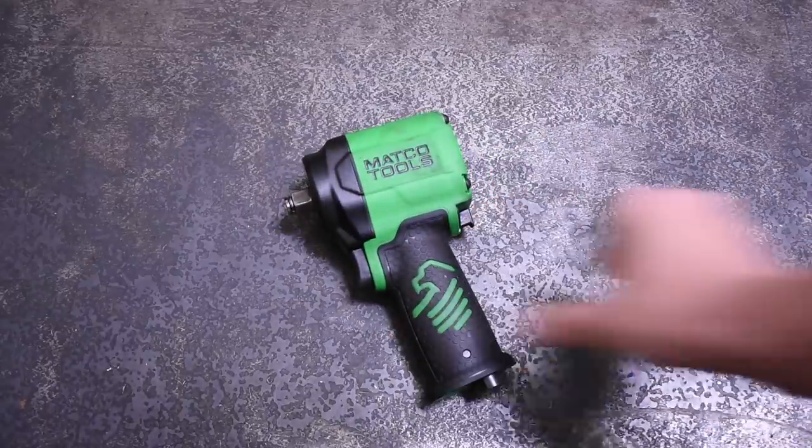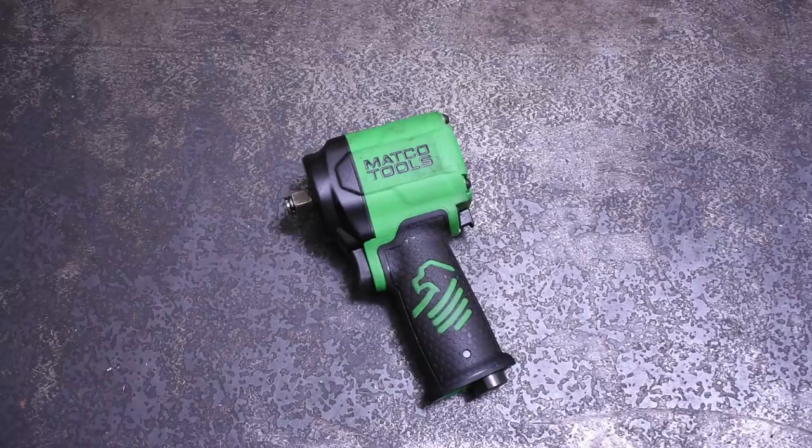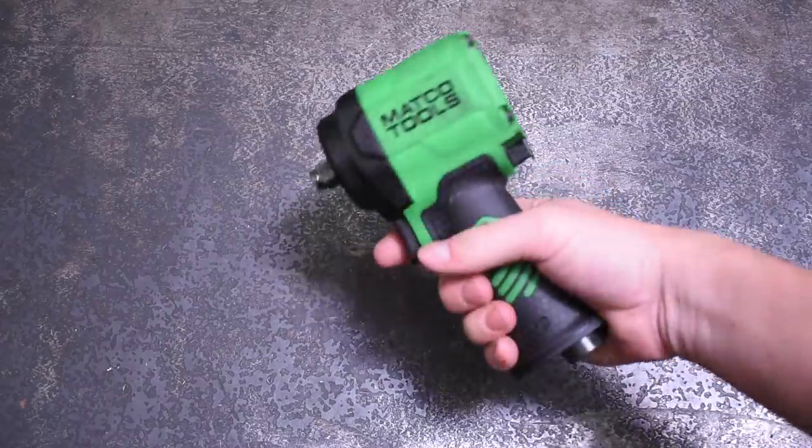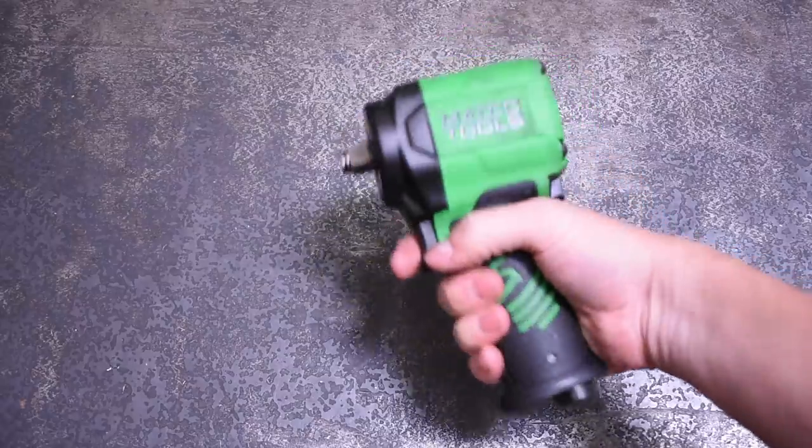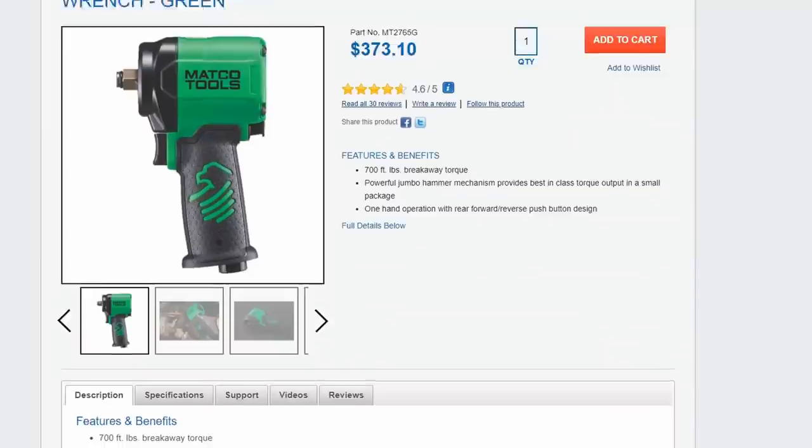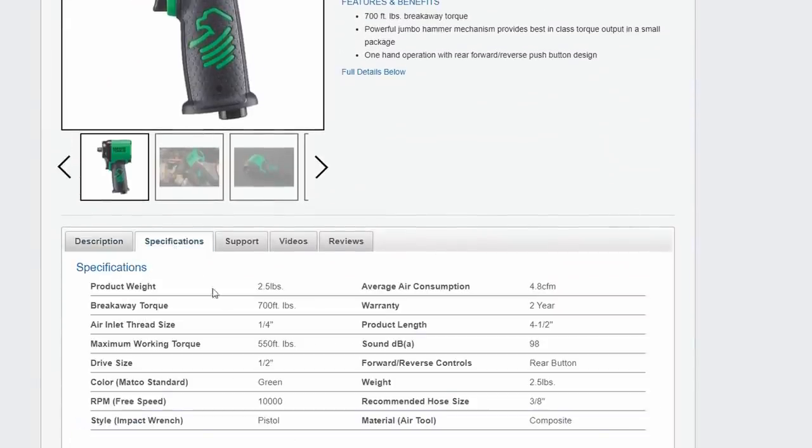This is the Matco MT2765G, G being for green. A kind viewer by the name of Joseph sent us this one, and we're glad he did because this stubby impact has a reputation for being the baddest boy on the playground when it comes to compacts. They advertise 550 working torque and 700 foot-pounds breakaway torque.